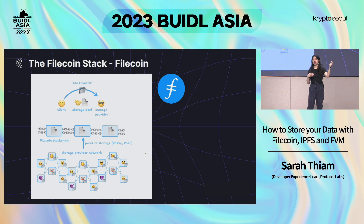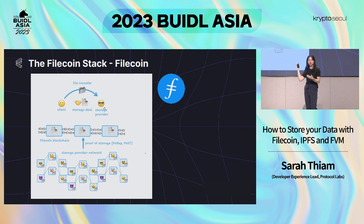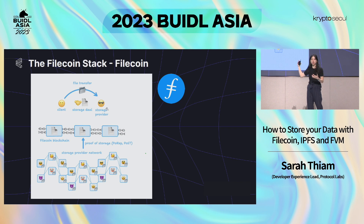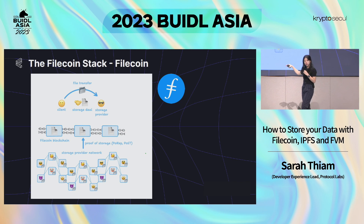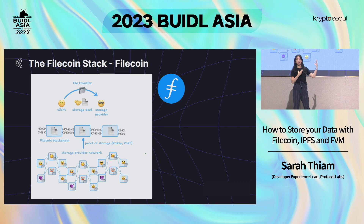The deal is put into escrow and onto the Filecoin network. File transfer happens off-chain via BitSwap or HTTP. The storage deal metadata gets stored on the Filecoin blockchain — things like how long you want to store data, the file size. We store just the metadata because it is very expensive to store large amounts of data on-chain. The storage providers have their own hardware, and every 24 hours they must prove they are storing your data — it's called Proof of Space-Time — and submit that proof back to the chain.